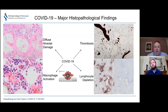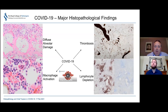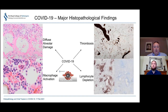In addition to diffuse alveolar damage, there were three other very significant findings. The first was thrombosis — you can see the large black areas representing thrombosis within the arteries and blood vessels of the lungs. This is a CD61 stain for platelets which really highlights the thrombosis very well, showing how widespread it was. The second major finding was macrophage activation; at the bottom you can see haemophagocytosis — red cells being eaten by phagocytes — characteristic of severe infection.